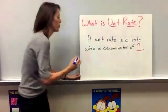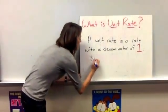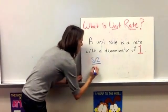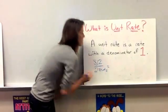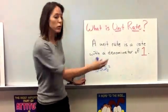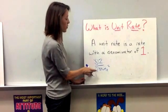Okay, so an example of a rate would be $12 for two shirts. Okay, now to make it a unit rate, what you have to do is you want to know how much it costs for one shirt. So you want to set your denominator equal to one.